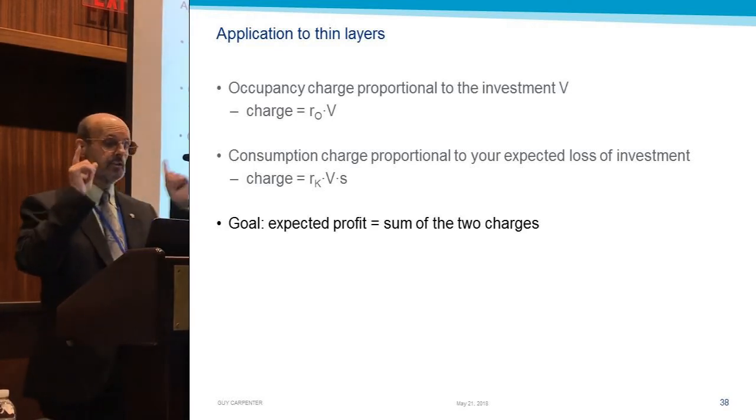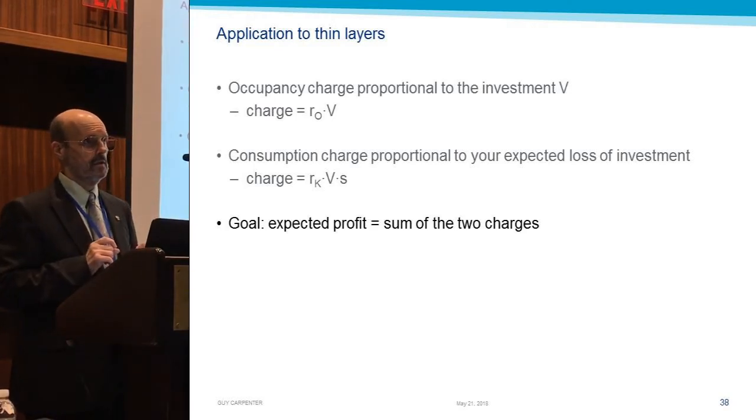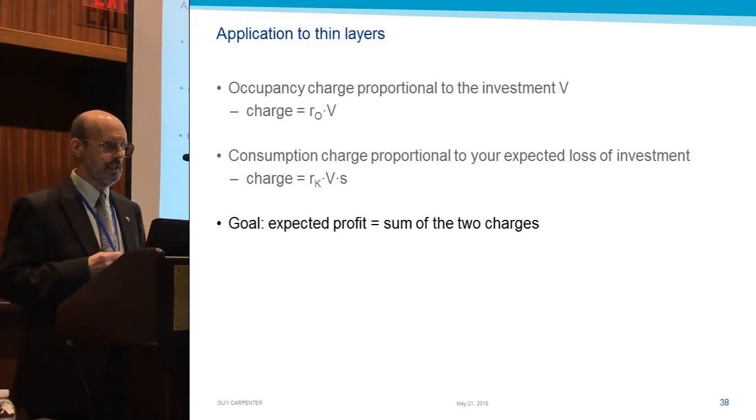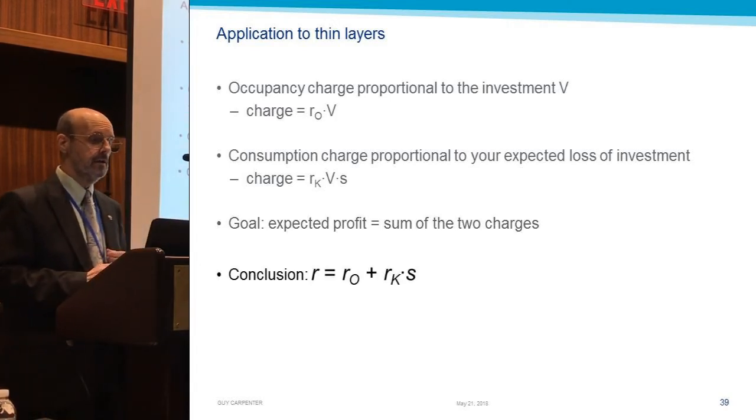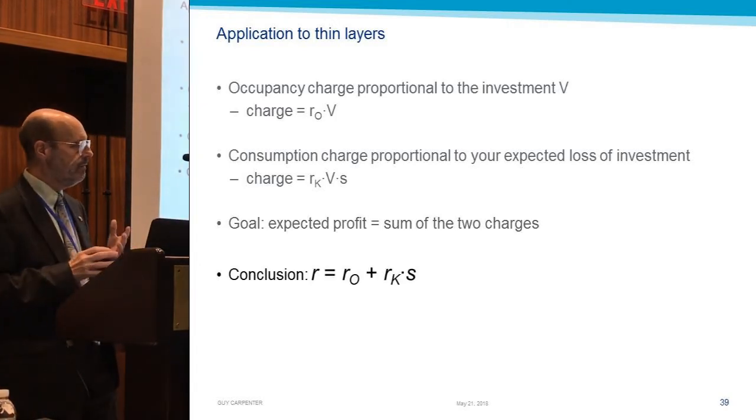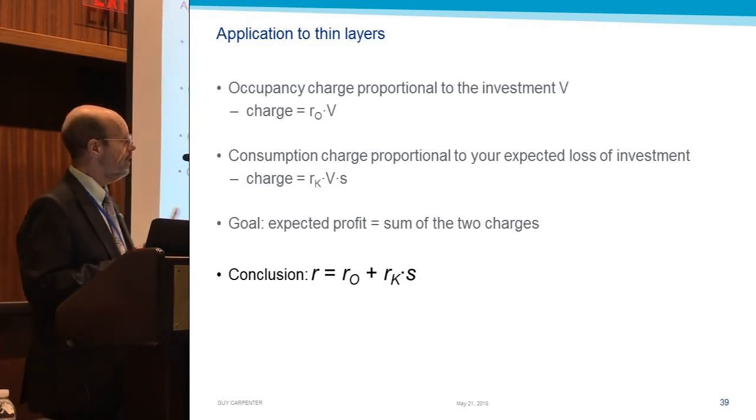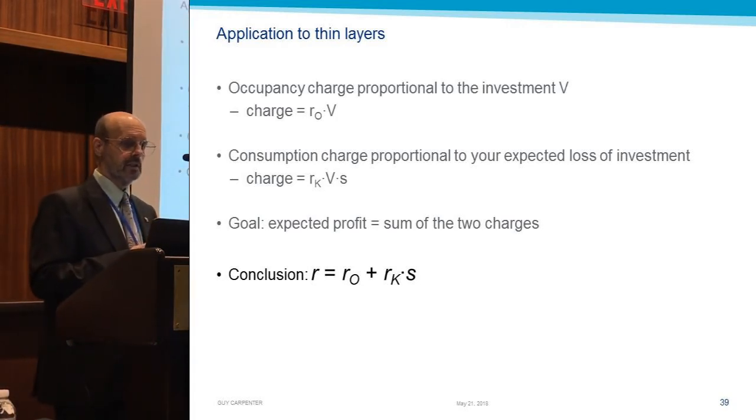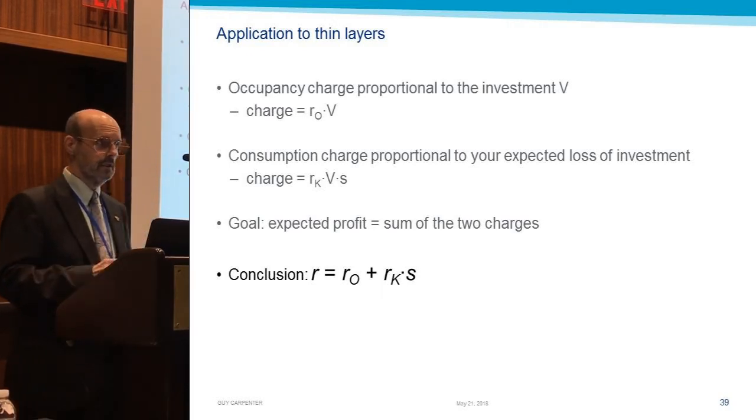Finally, we're going to say the expected profit of G(S) minus S, we're going to say the expected profit needs to be the sum of these two charges. So if we pull all of that together and massage it algebraically, and the handout does that for you, we come to the conclusion that the expected or demanded rate of return, the ROE on that tranche, is just R_O plus R sub K times S. And so the yield that we're demanding is a linear function of the loss probability, a linear yield. So that's the linear yield model.